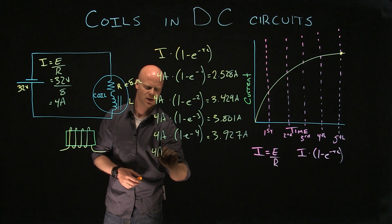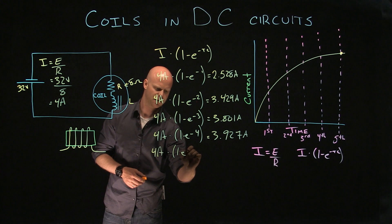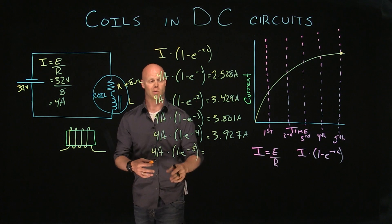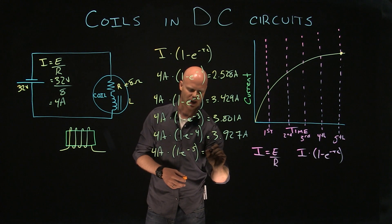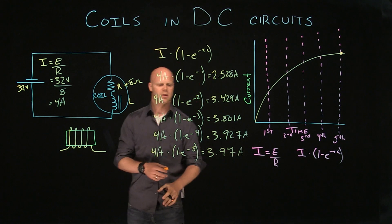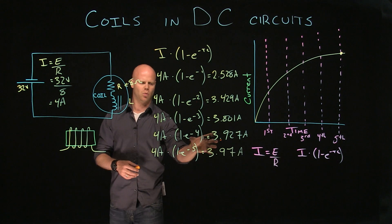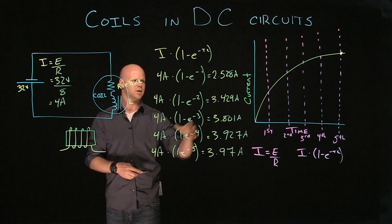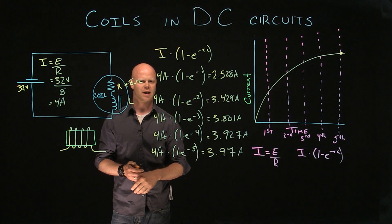If we do this calculation, what we'll see at the fifth time constant, it appears that it's not quite there. But we know that it's about 3.97 amps. We know that the current will reach 4 amps. Just with this theoretical value, with this calculation, it's going to appear that it doesn't.